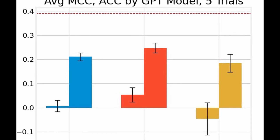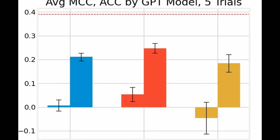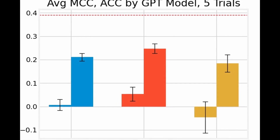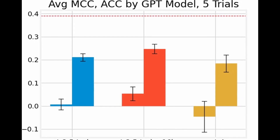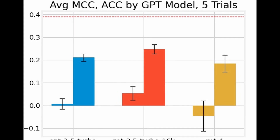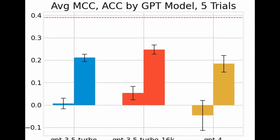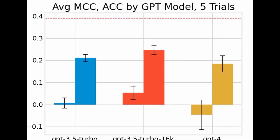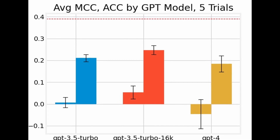As you can see from the chart, it yielded an average MCC of 0.006 and an average accuracy of 21.1%. The standard deviation for MCC and accuracy were 0.023 and 1.7% respectively.